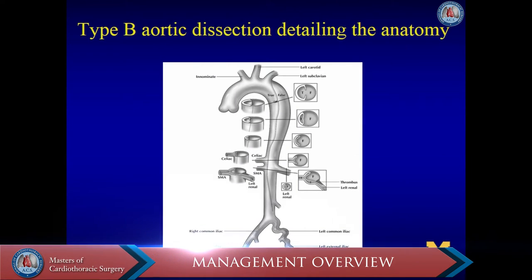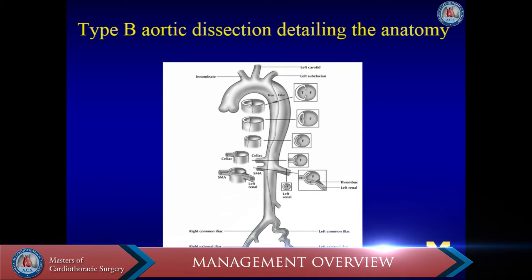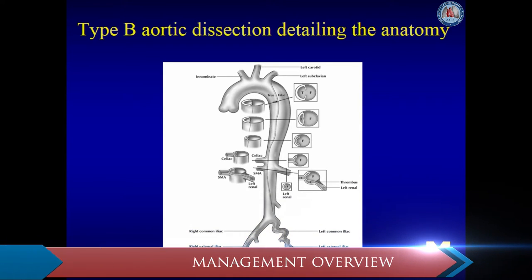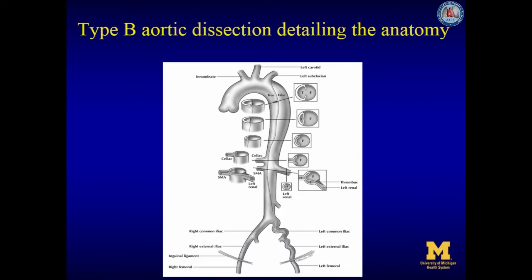First we will describe the management of acute type B dissection and malperfusion with figures of the different steps. Secondly we will describe a case of a patient with acute type B dissection with malperfusion. This figure demonstrates the anatomy of a type B aortic dissection.